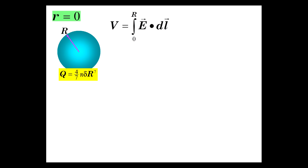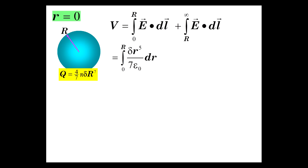So V at r = 0 is: the integral from 0 to R of the E-field inside — which we integrate — plus the integral from R to infinity of E · dl, which we already computed. The E-field inside was δr⁵/(7ε₀). So we have the integral of δr⁵/(7ε₀) dr from 0 to R, plus the piece we already found: δR⁶/(7ε₀).